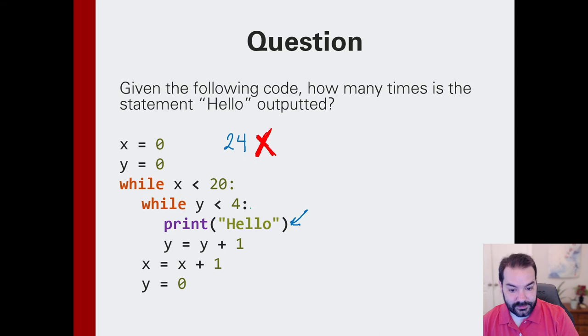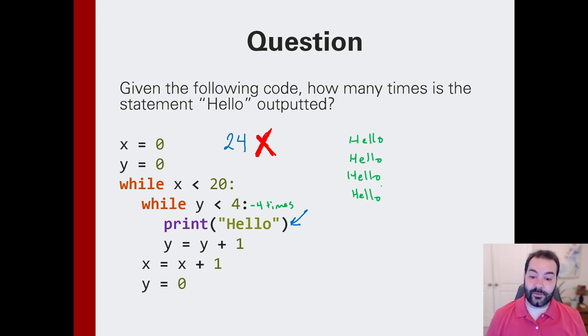So in theory, you could imagine, since this is going to run four times, that's hello, hello, hello, hello. Then what happens? Well, that loop is done. We go down. x is incremented by one, so x is now one. y gets reset, and we come back, and we repeat that entire process.